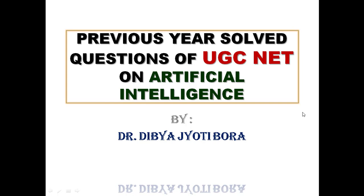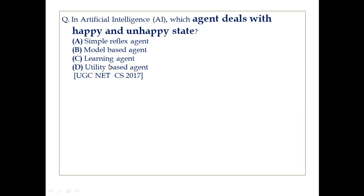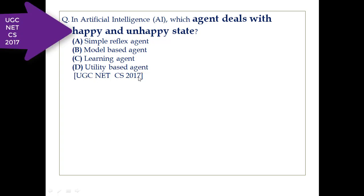The question is: in Artificial Intelligence (AI), which agent deals with happy and unhappy state? First option: simple reflex agent. Second option: model based agent. Third option: learning agent. Fourth option: utility based agent. This question was asked in UGCnet CS 2007.